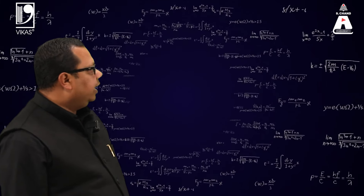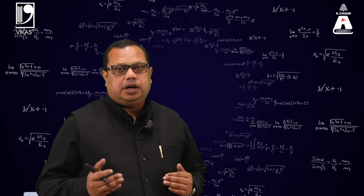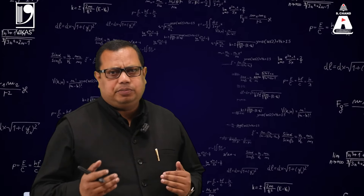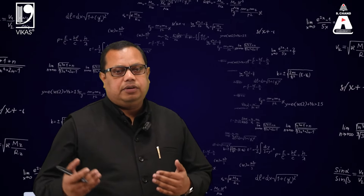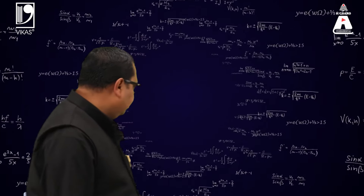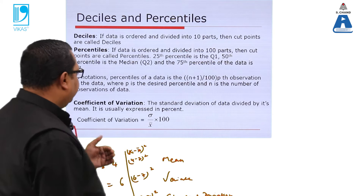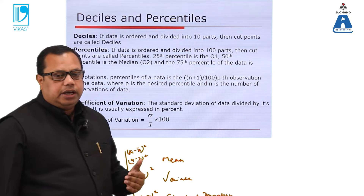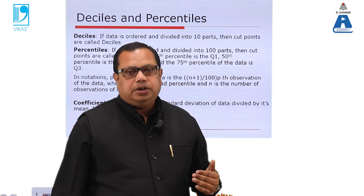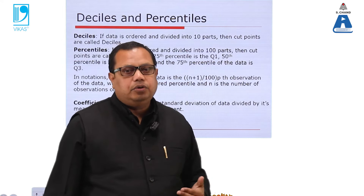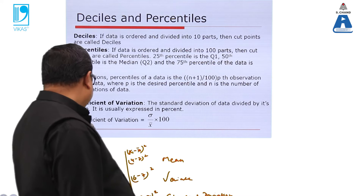To recap what we have covered: starting from simple calculations — mean — we moved to standard deviation and then the coefficient of variation. We also studied deciles and percentiles: breaking data into 10 parts and 100 parts, calculating Q1, Q2, and Q3, noting that Q2 is the median of the class, and computing the coefficient of variation.